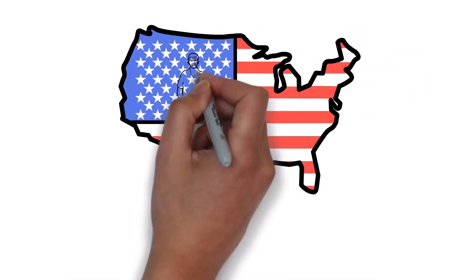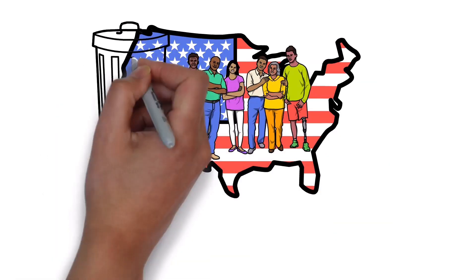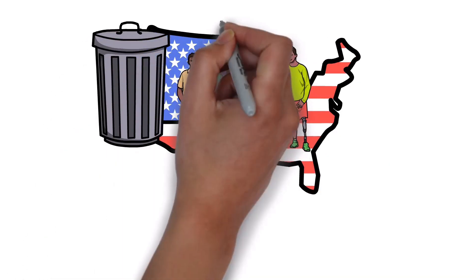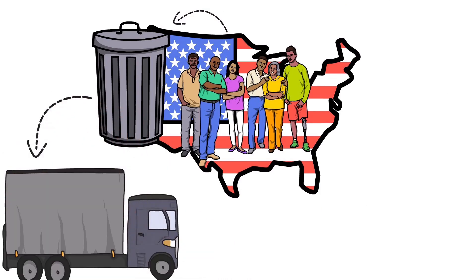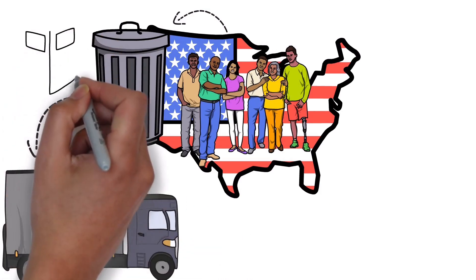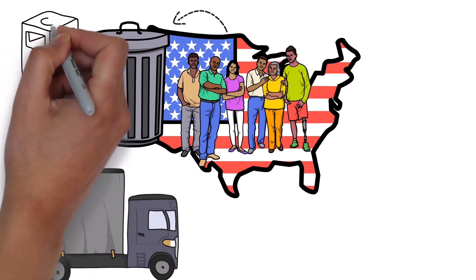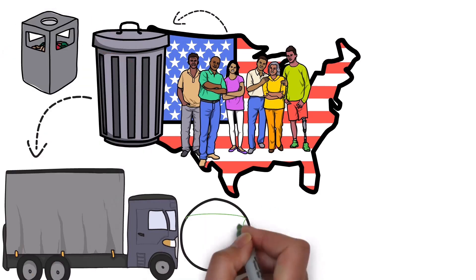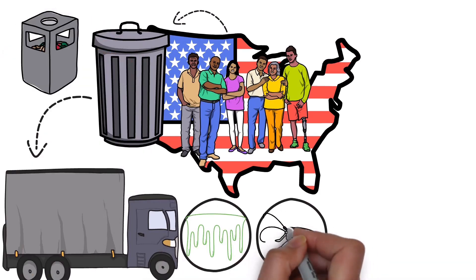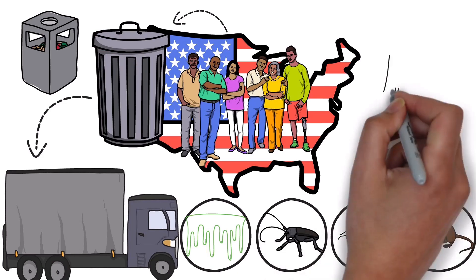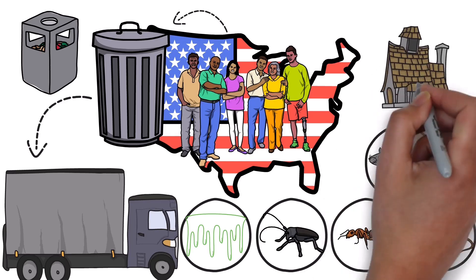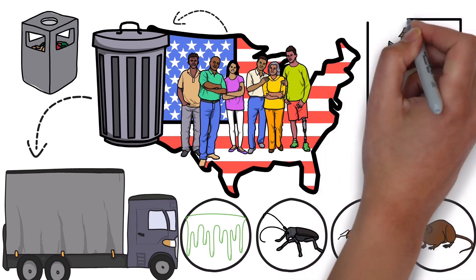Americans throw away almost five pounds of trash per person every day and all this trash ends up in your trash cans where a garbage truck then comes and picks it up. But after the trash has been taken to the trash can there's always something left over. Gunk, smelly garbage juice that attracts cockroaches, ants, rats, possums and other rodents and pests that could eventually find their way into your home and this is where you come in.